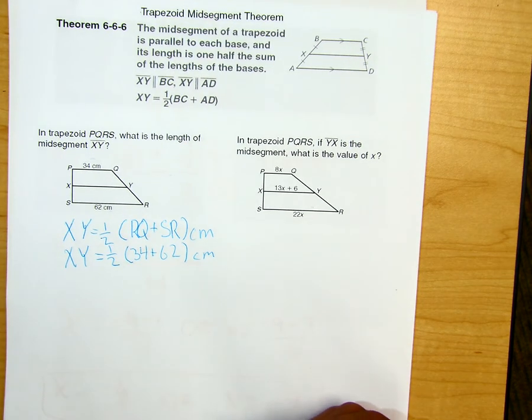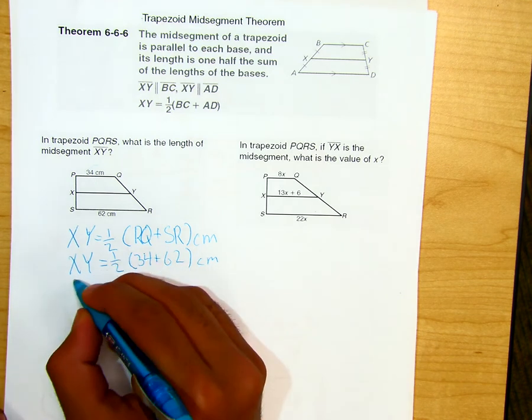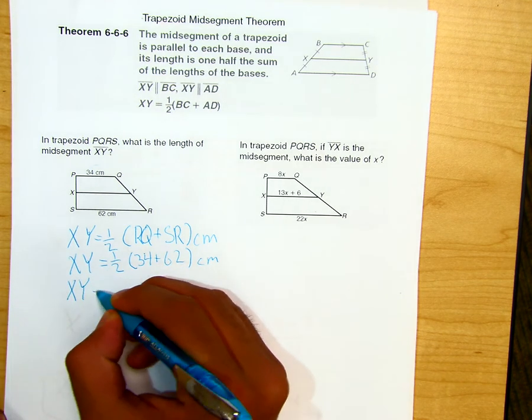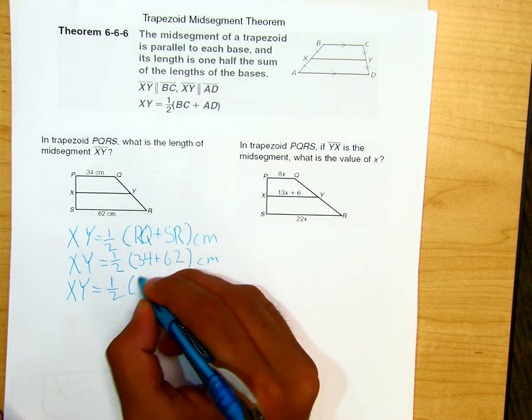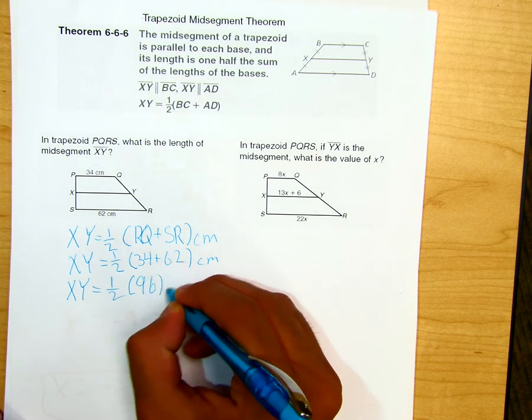Once, twice. Okay, so the next step is we'll then convert to one-half. One-half would be 96 centimeters.